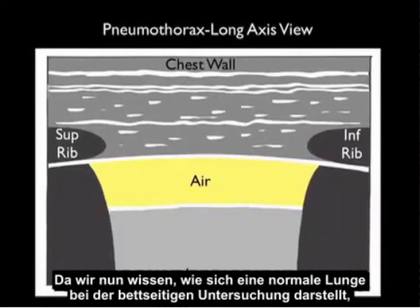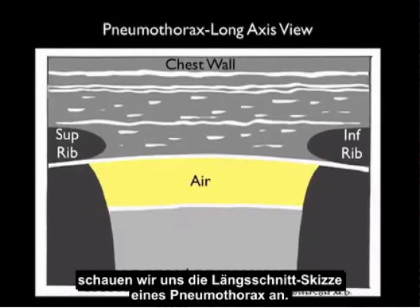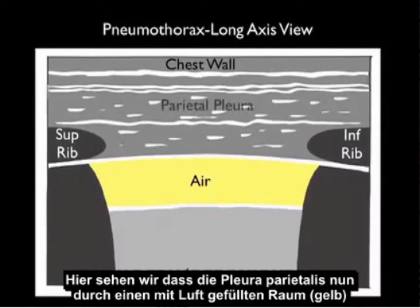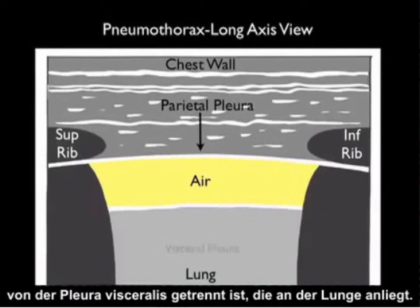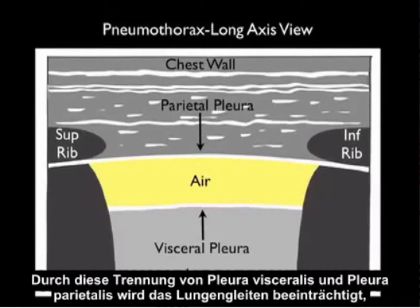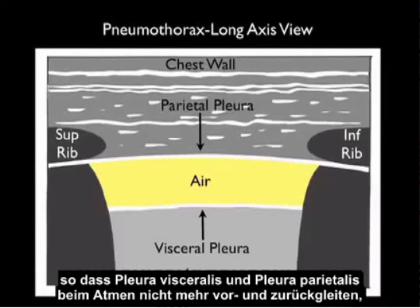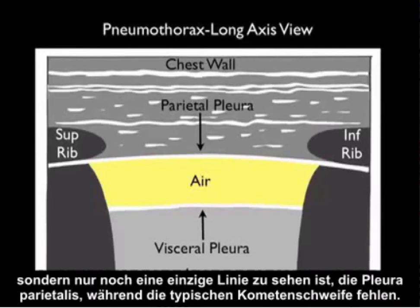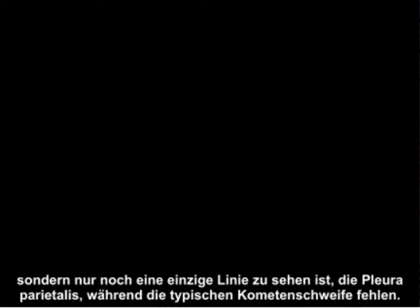Now that we understand what a normal lung looks like on bedside examination, let's take a look at a pictorial showing a pneumothorax in a long axis view. We see here that the parietal pleura is now split from the visceral pleura, which is attached to the lung, by a layer of air. It's the splitting of the parietal and visceral pleura that causes a lack of lung sliding, and instead of the opposed visceral and parietal pleura sliding back and forth as the patient breathes, all we see is a single line — the parietal pleura — with a lack of vertical comet tails coming off the back.